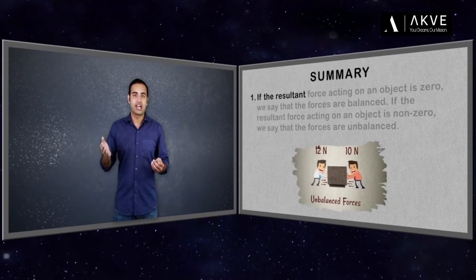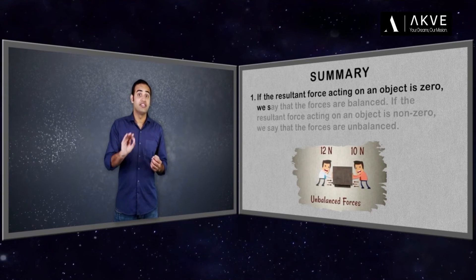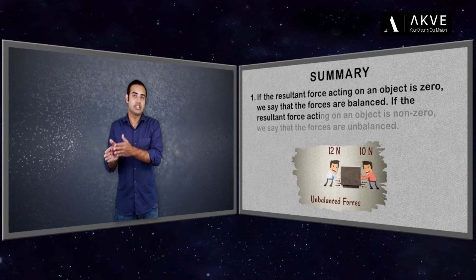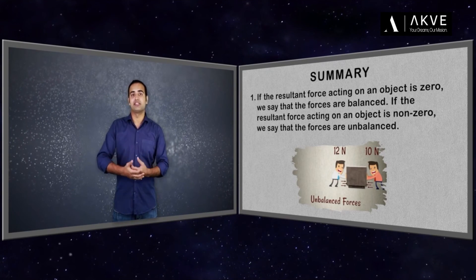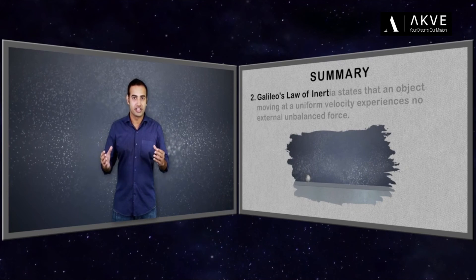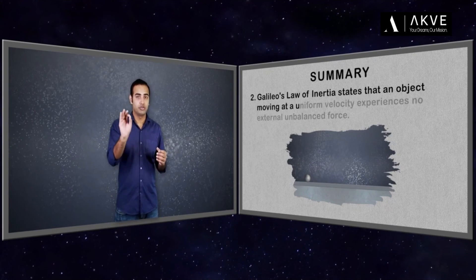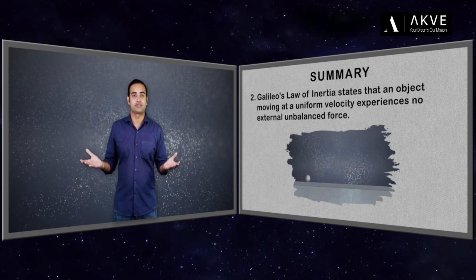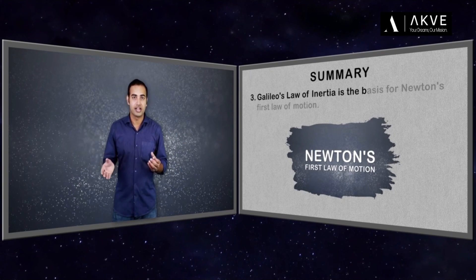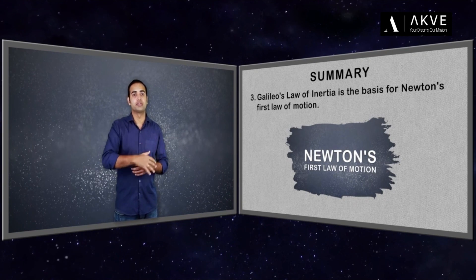If the resultant force acting on an object is zero, we say that the forces are balanced. If the resultant force acting on an object is non-zero, we say that the forces are unbalanced. Galileo's Law of Inertia states that an object moving at a uniform velocity experiences no external unbalanced force. Galileo's Law of Inertia is the basis for Newton's first law of motion.